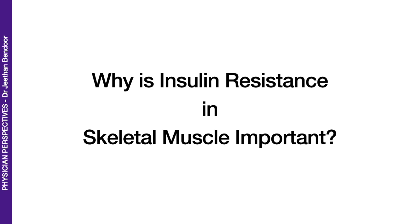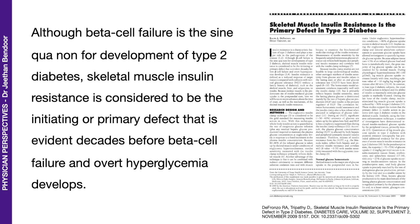Why is insulin resistance in skeletal muscle important? Let's look at this landmark study published in 2009: 'Skeletal muscle insulin resistance is the primary defect in type 2 diabetes.' The authors say that although beta cell failure is the sine qua non for development of type 2 diabetes, skeletal muscle insulin resistance is considered to be the initiating or primary defect, evident decades before beta cell failure and overt hyperglycemia develops.